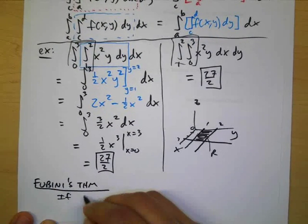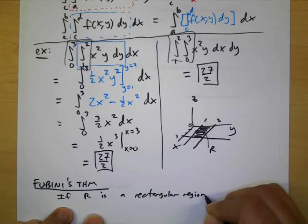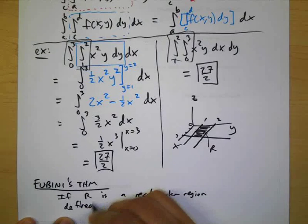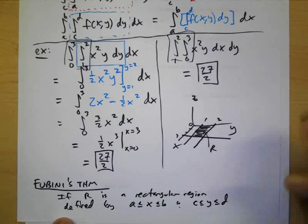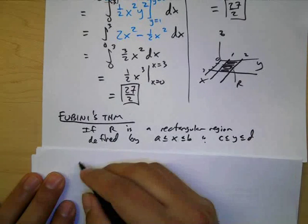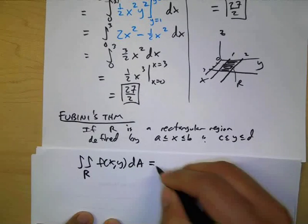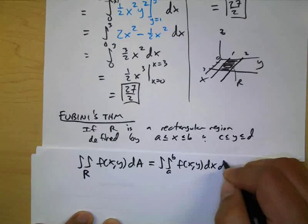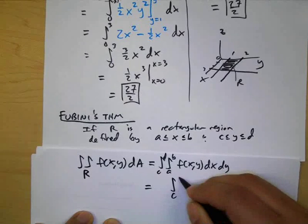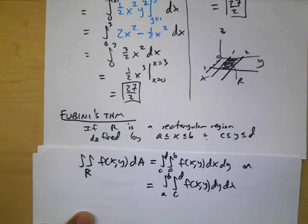So if r is a rectangular region defined by x being between a and b and y being between c and d, then the double integral of f of x y d a can be integrated in any order that you want. So if you want to go x first fine, or if you want to go y first that is also fine. Whichever one you prefer is fine.